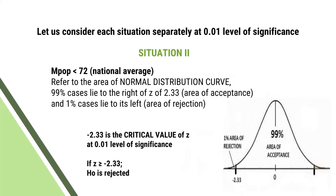Consider situation 2: if the mean of the population is less than 72 — less than the national average. Refer to the area of the normal distribution curve: 99% of cases lie to the right of Z equals minus 2.33 — this is the area of acceptance — and 1% of cases lie to its left, the area of rejection. Minus 2.33 is the critical value of Z at 0.01 level of significance. If Z is less than or equal to minus 2.33, the null hypothesis is rejected.